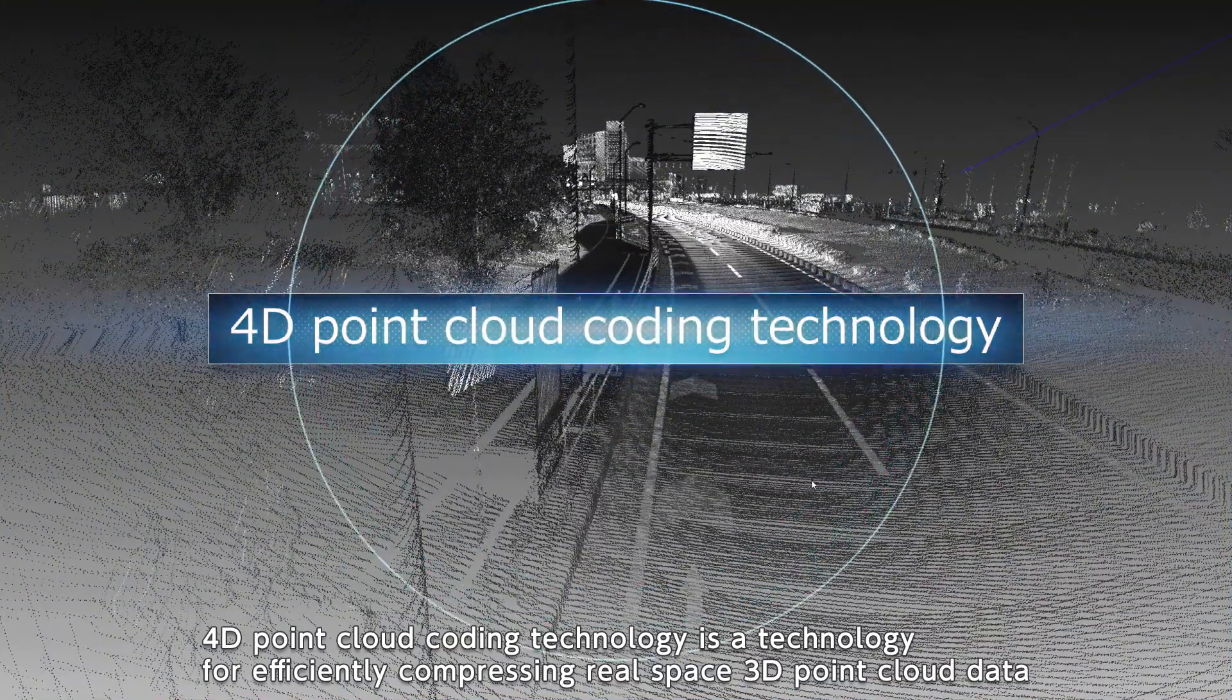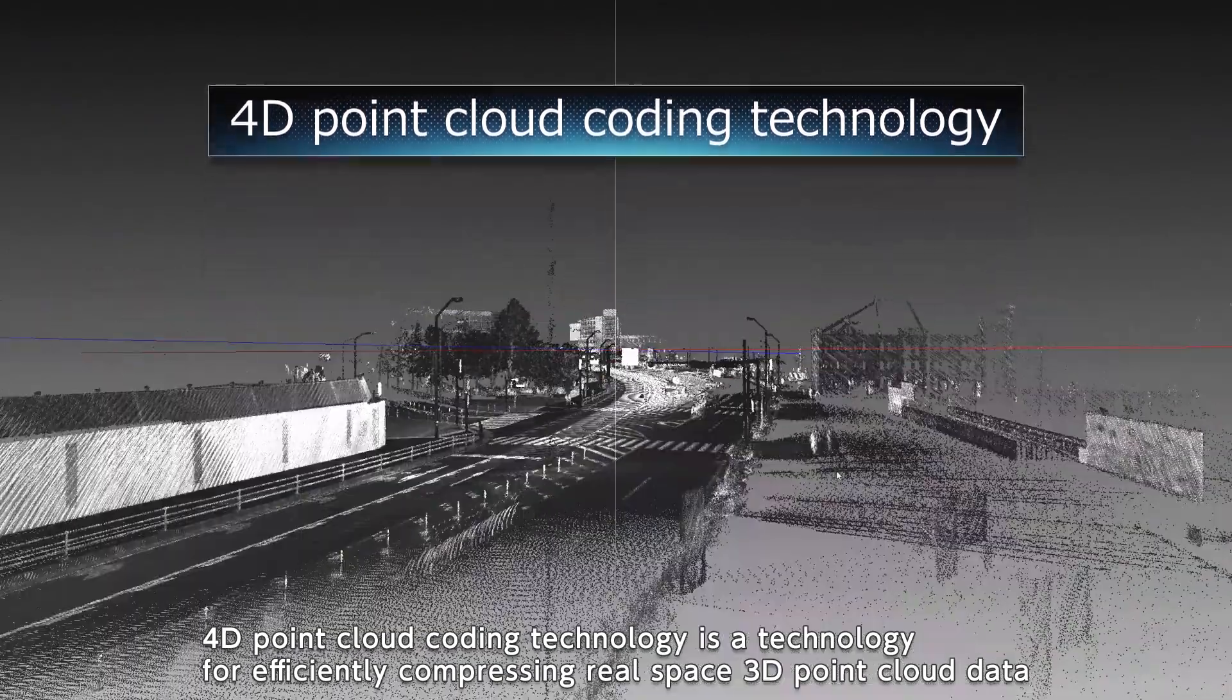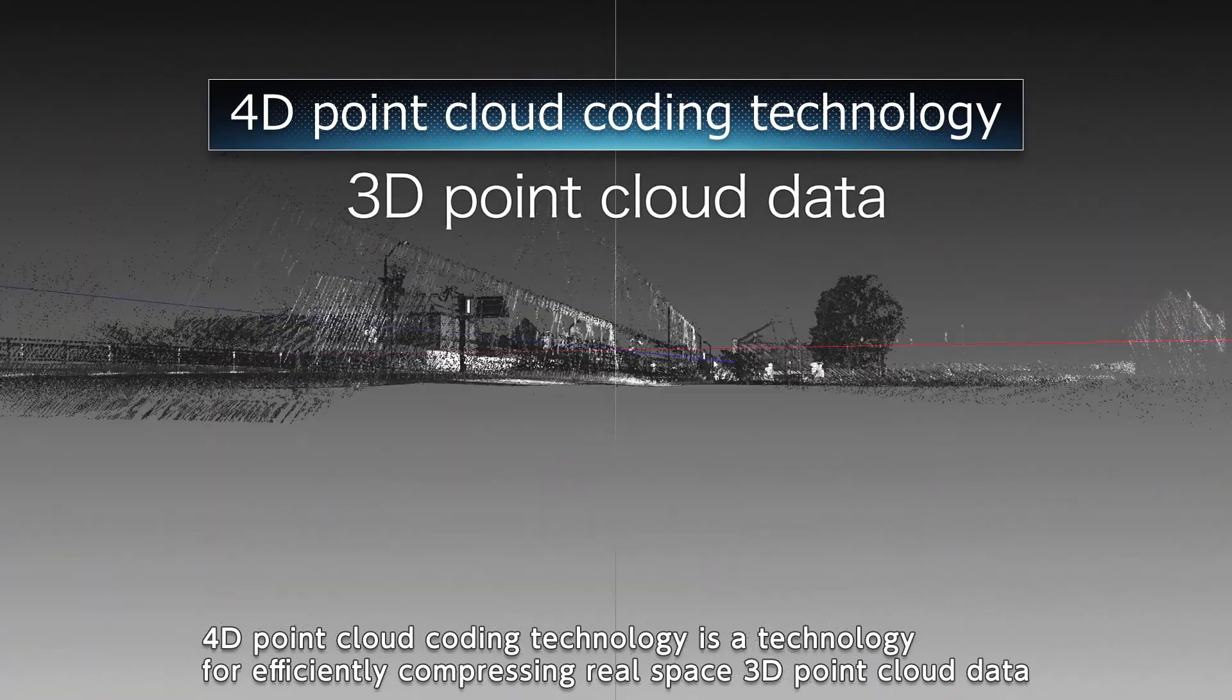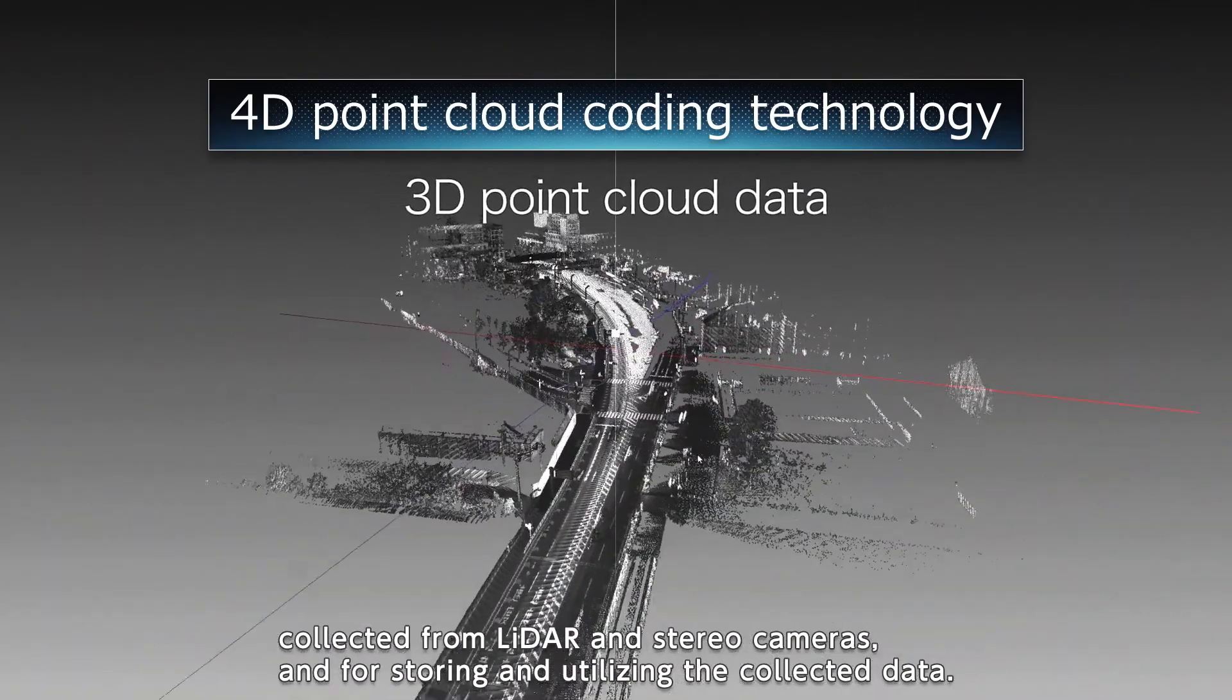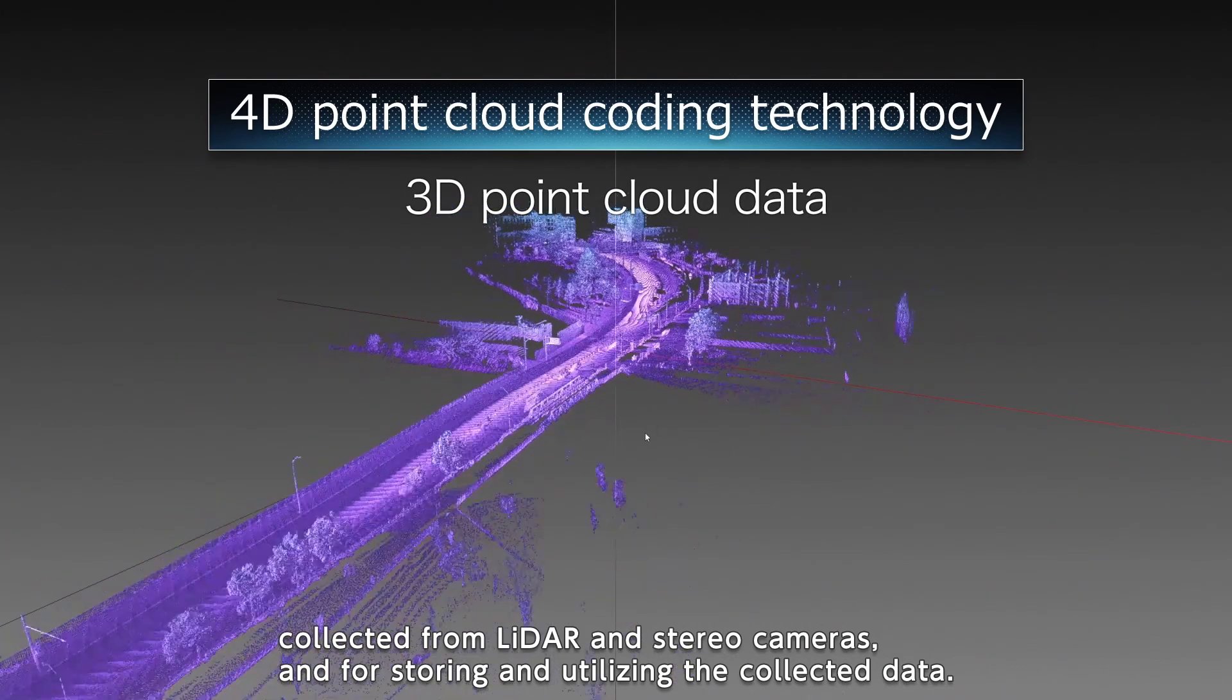4D point cloud coding technology is a technology for efficiently compressing real space 3D point cloud data collected from LiDAR and stereo cameras and for storing and utilizing the collected data.